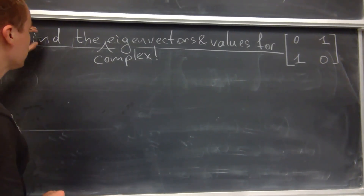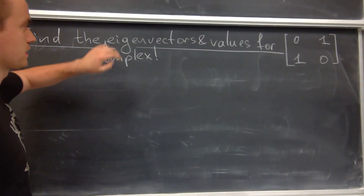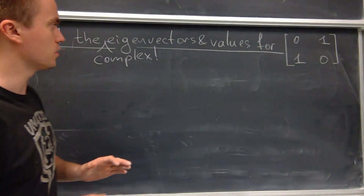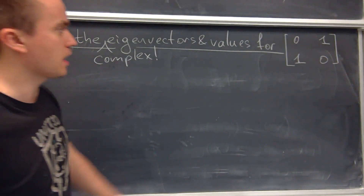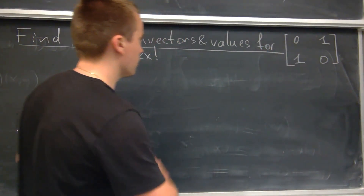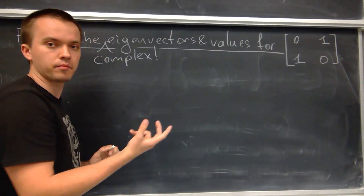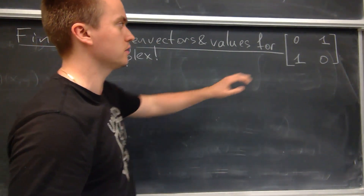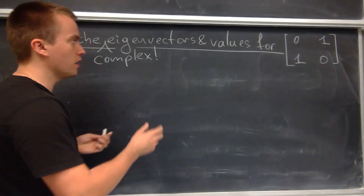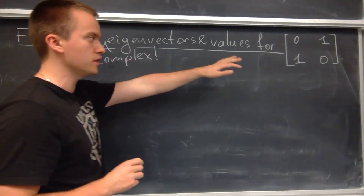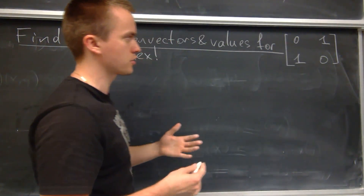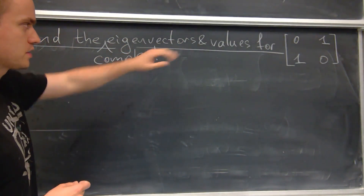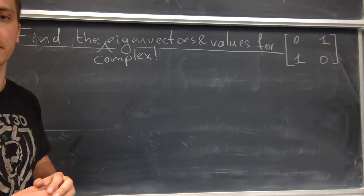Hello guys. In this video I want to show how to find the complex eigenvectors and eigenvalues for this matrix. The trick for this problem is that when the eigenvalues are real numbers we have no problems finding eigenvectors. But the problem becomes a little bit tricky if the eigenvalues are going to be complex numbers. For this simple matrix I'm going to show you the simplest example of how to deal with complex eigenvalues to find your eigenvectors.